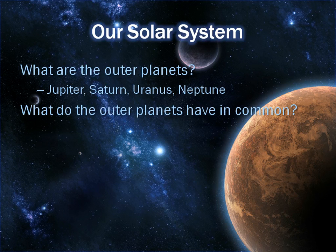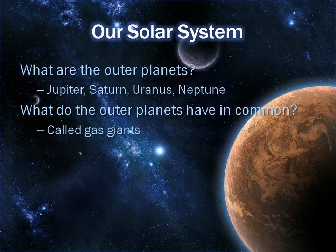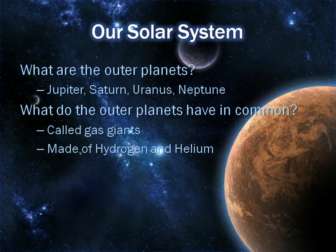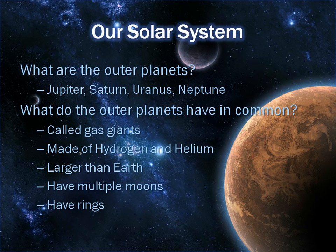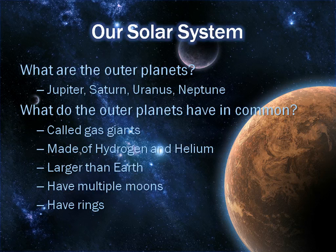The next topic is what do the outer planets have in common? They're called gas giants because they're all made out of gas, specifically mainly hydrogen and helium — which, if you think about it, is also what the sun consists of. They are larger than the Earth and have multiple moons and rings. They do not have nuclear fusion, so that's why they're not the same as the sun. But they all do have rings, even though some are very faint.